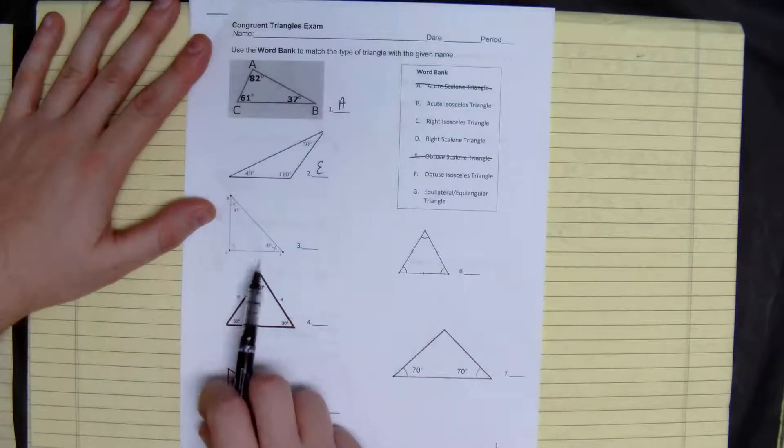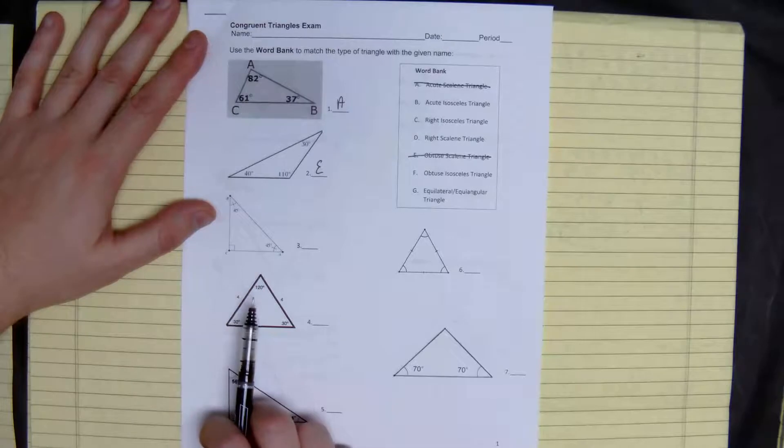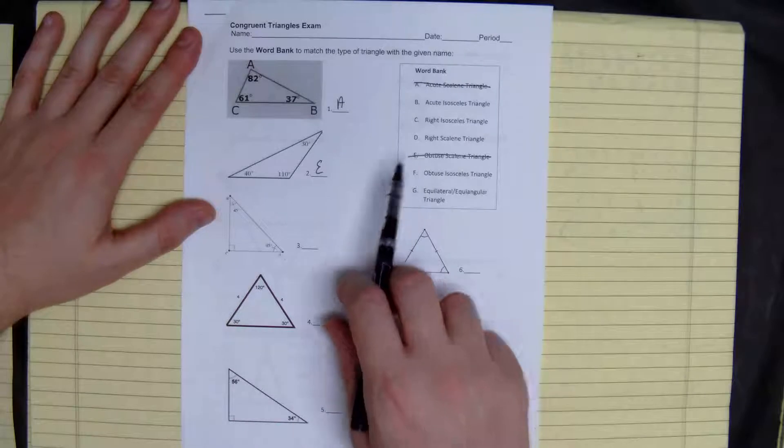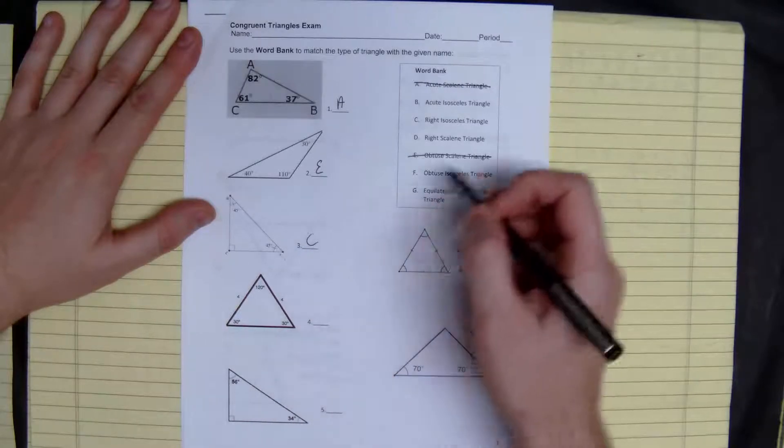Here, we have two 45 degrees and a 90 degree angle. So two angles are the same, so two sides are the same. It's 90 degrees, so we have an isosceles right triangle.